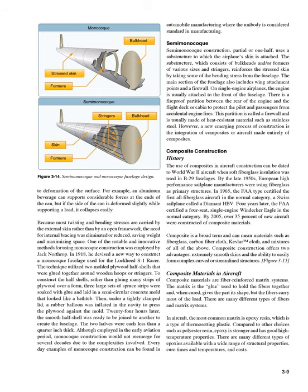Composite materials in aircraft are fiber-reinforced matrix systems. The matrix is the glue used to hold the fibers together and, when cured, gives the part its shape, but the fibers carry most of the load. In aircraft, the most common matrix is epoxy resin, which is a type of thermosetting plastic. Compared to other choices such as polyester resin, epoxy is stronger and has good high-temperature properties. There are many different types of epoxies available with a wide range of structural properties, cure times and temperatures, and costs.